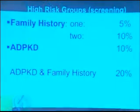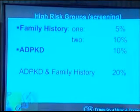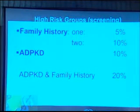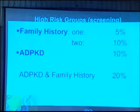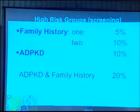There's been quite a bit of experience with screening people for brain aneurysms. The two most commonly screened groups are those with a family history of aneurysm — if you have a family member with a brain aneurysm, you're somewhere between five and ten times more likely to have one yourself — and the same for people with what's called ADPKD, which is polycystic kidney disease.